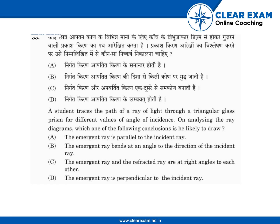The correct answer is option B — the emergent ray bends at an angle to the direction of the incident ray. This is because when light passes through a glass prism, there is a deviation in the path of light passing through the prism. So the answer is option B.